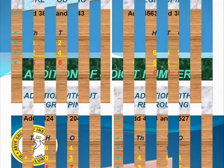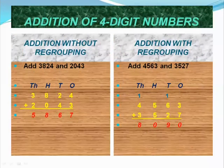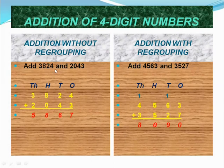Let us see now. First, addition of 4-digit numbers — addition without regrouping. For example, add 3,284 and 2,043. First we have to write those numbers one below the other and then we have to add.